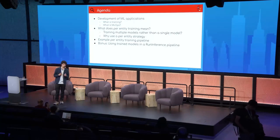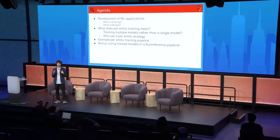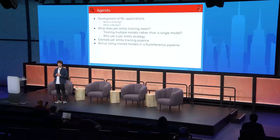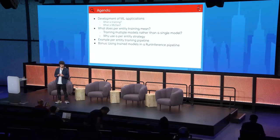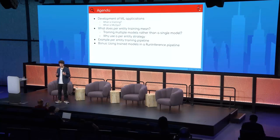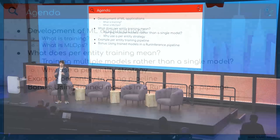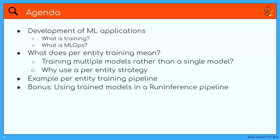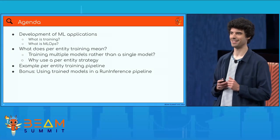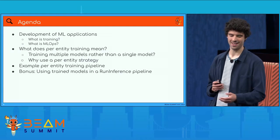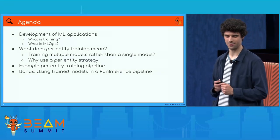Let's take a look at what we are going to see in this talk. I'm first going to go lightly over development of ML applications — what training is and a little bit of what MLOps means. Then we're going to look at per entity training and what it actually means and why you would use it. Then we'll dive into an example pipeline, check how that would look in code. And as a little bonus, I'll tell you how to actually use your models using the run inference transform.